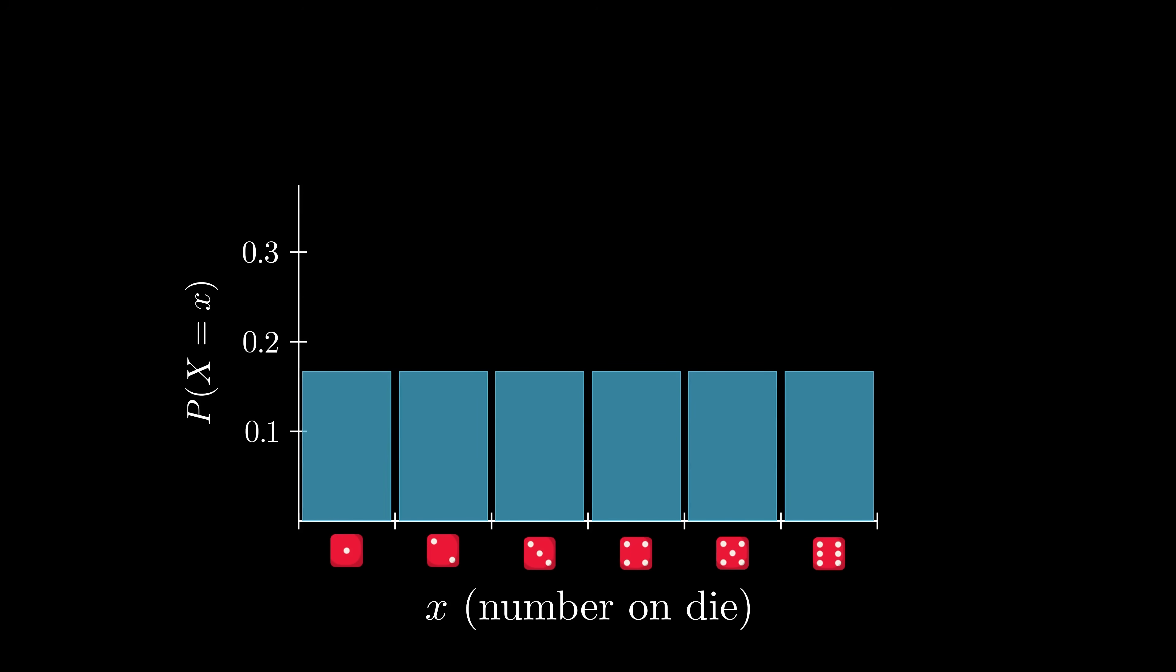What we have shown here is called the probability distribution for a single dice roll, or more precisely, the probability mass function. This function takes as input a possible outcome, and returns the probability of that outcome occurring.